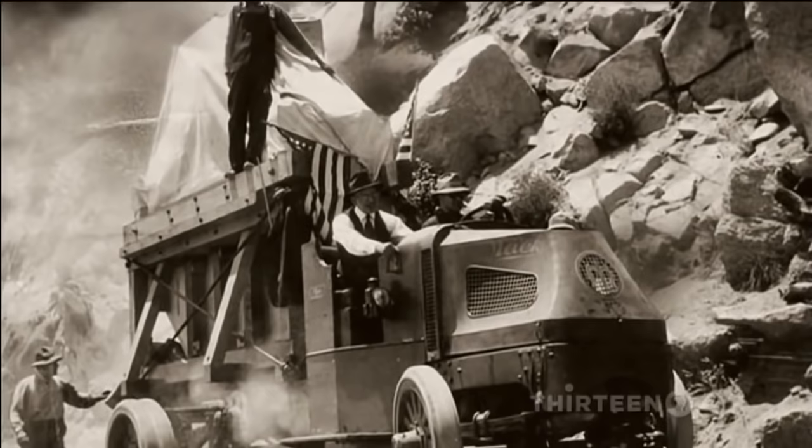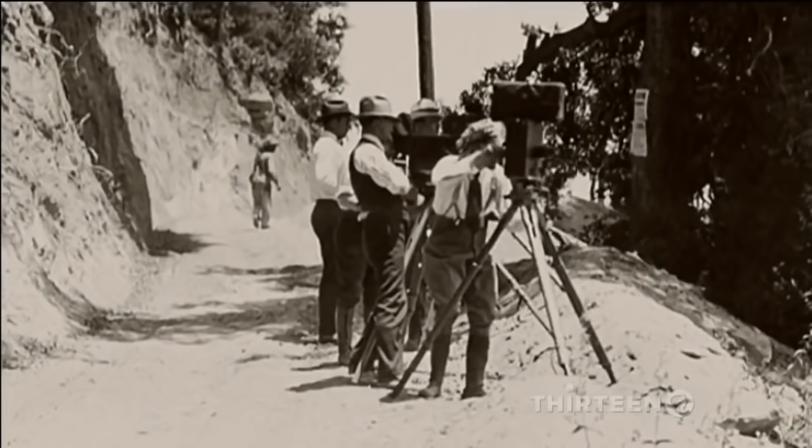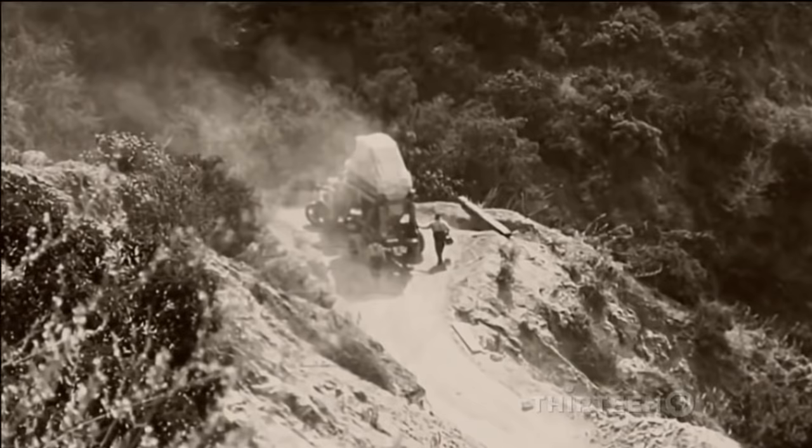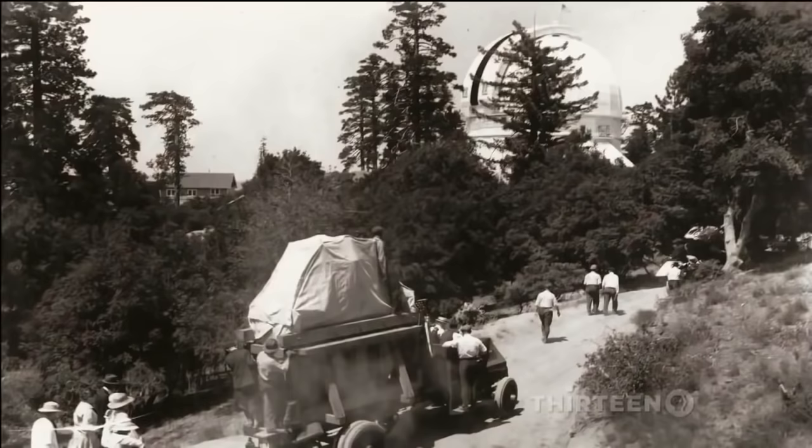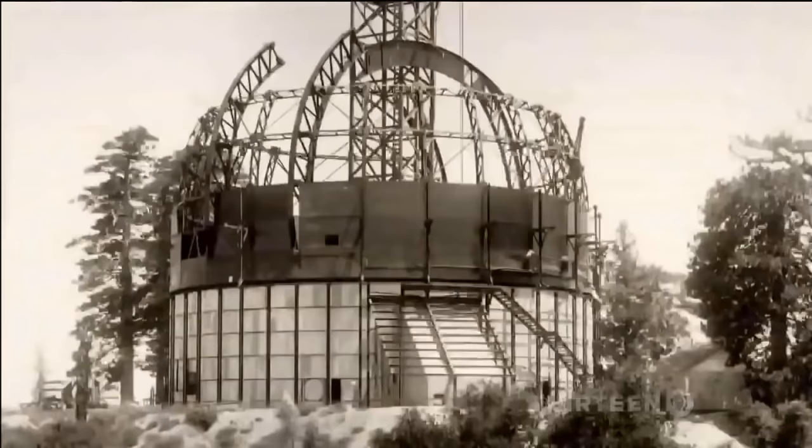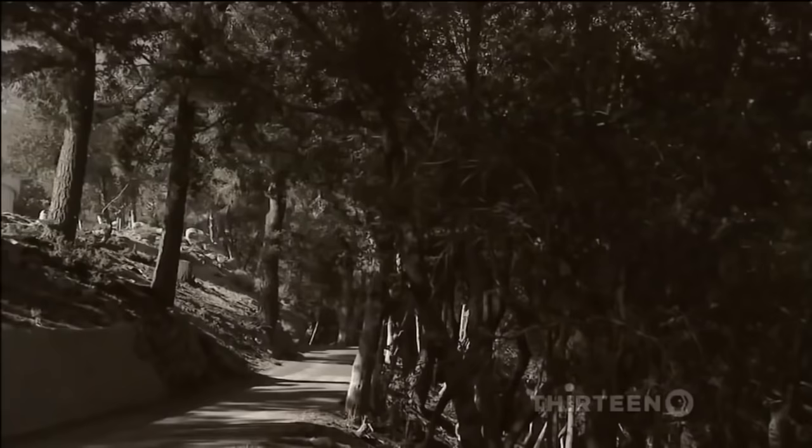One hundred years ago, the simple idea of putting an observatory on top of a mountain is revolutionary and an enormous logistical challenge. Hundreds of tons of steel and concrete have to be carefully hauled up the narrow mountain roads. But the clear skies are worth it. Mount Wilson will become the highest observatory on Earth and a blueprint for observatories all over the world.